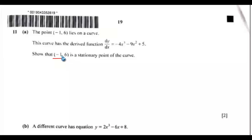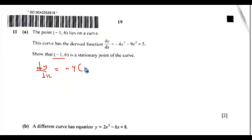So by the time you substitute x for negative 1, you should get 0 as the value of dy/dx. So that means dy/dx equals negative 4 into negative 1 cubed, then minus 9 into negative 1 squared plus 5.